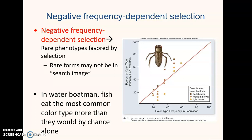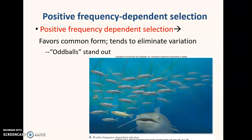This is the case of the water boatman, an insect preyed upon by fish. Fish will eat the most common color type more often than they would by pure chance alone. It could also come down to resource competition — genotypes sometimes differ in their resource requirements, and rarer genotypes will have less competition for the resources they need, which is particularly true of plants. Positive frequency-dependent selection is the opposite: it favors the common form and eliminates variation. The rarer a genotype becomes, the more selection pressure is against it. In other words, oddballs stand out — they attract attention from predators and end up being eaten more frequently than the more common genotype that blends in.